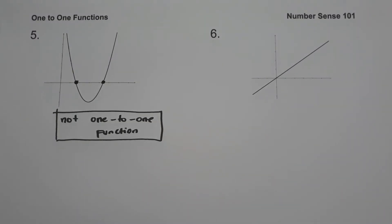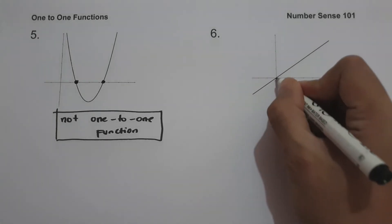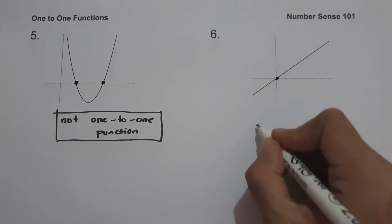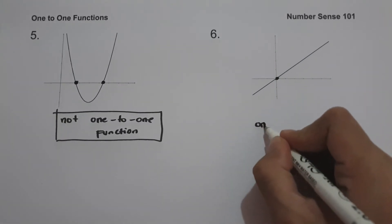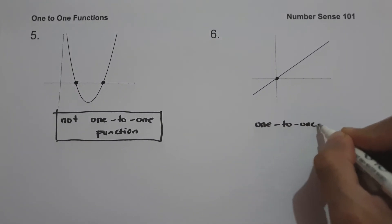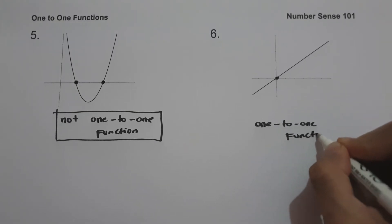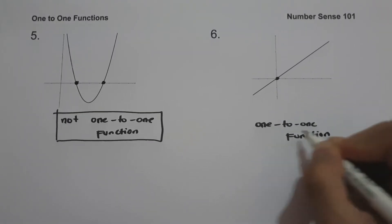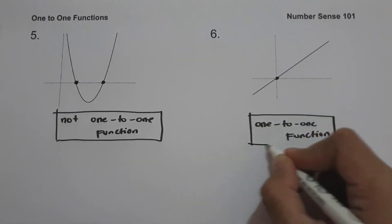On example number six, we have a graph of a linear function. This graph is an example of one-to-one because it intersects the horizontal line at exactly one point.